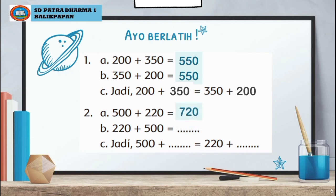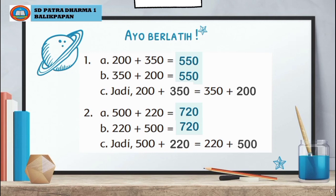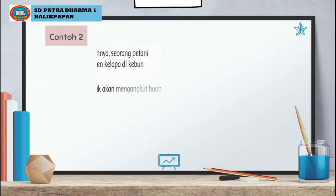Nomor 2 bagian A: 500 ditambah 220 hasilnya adalah 720. Bagian B: kita tukar, 220 ditambah 500 hasilnya sama yaitu 720. Bagian C: jadi 500 ditambah 220 sama juga dengan 220 ditambah 500.